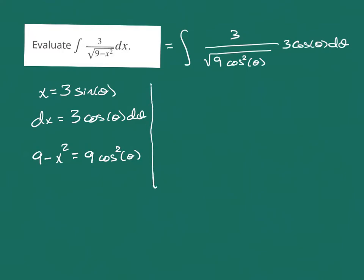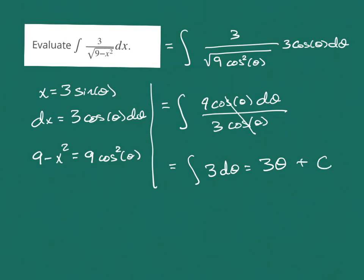So what happens in our integration? We've got an integral. We've got a 9 cosine of theta on top. On the bottom, I have 3 cosine of theta, so my cosines cancel out at that point. And I just have the integral of 3 d theta. And so that gives me just 3 theta plus C.